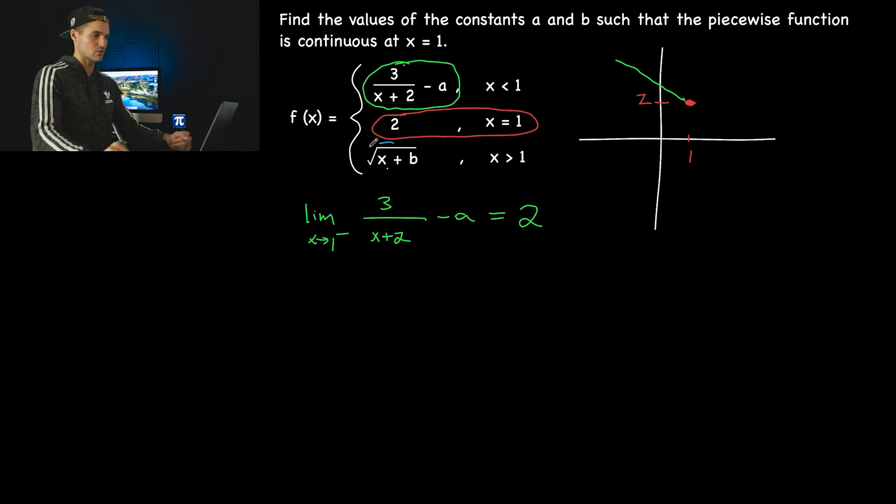Now this function, square root of x plus b—I know it's a square root function with a certain shape—I'm just going to visually show it as a line. Let's hypothetically say it looks like that.